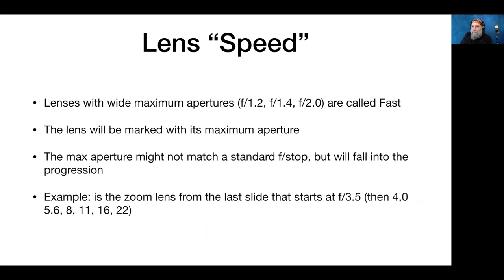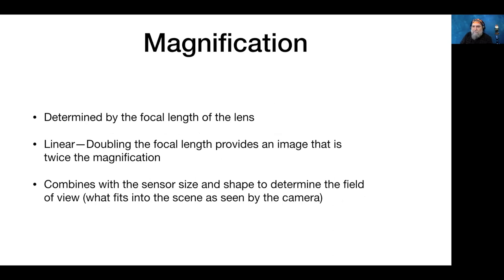Lens speed: lenses with wide apertures are fast lenses, marked with the maximum aperture on the lens. The maximum aperture may not match a standard f-stop but will fall within the progression. Magnification is determined by focal length and is linear — double the focal length and you get an image that's twice the magnification. Combined with sensor size and shape, it determines the field of view.